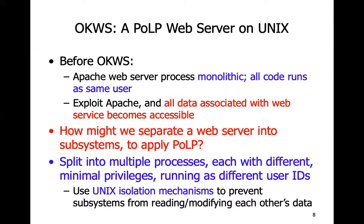Our answer is to split into multiple processes, each with different privileges and each running a different user ID. Splitting into processes is easy with a fork command. But how do you run processes with different privileges? After a fork, you run with the same privileges as the parent. You also want different user IDs, because otherwise you inherit the file system permission bits of the parent process. So let's look at the Unix isolation mechanisms that allow you to implement this — specifically chroot jails and file descriptor passing.